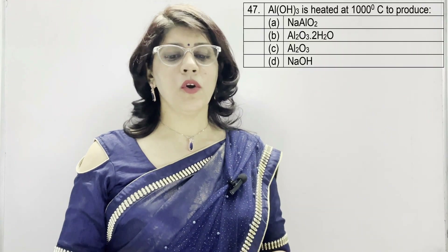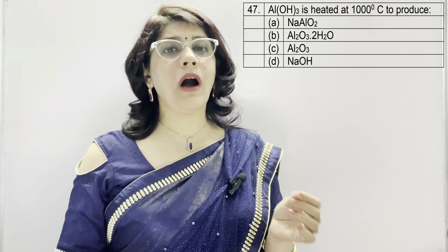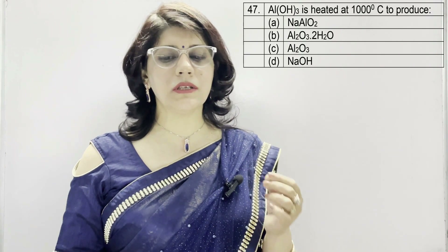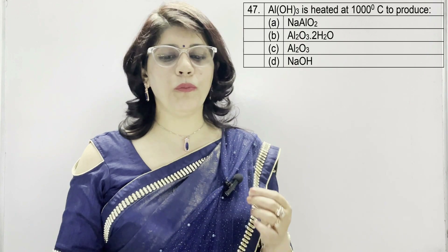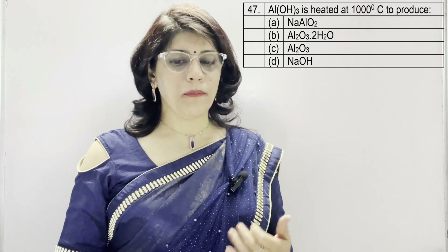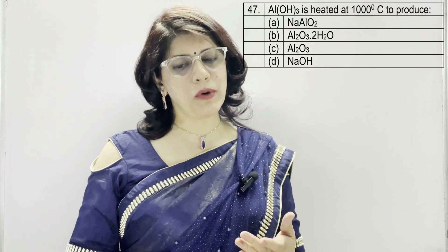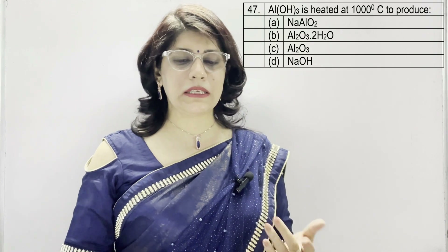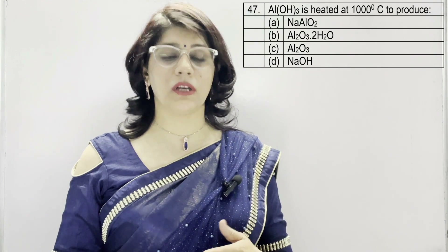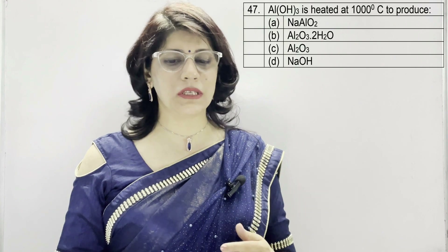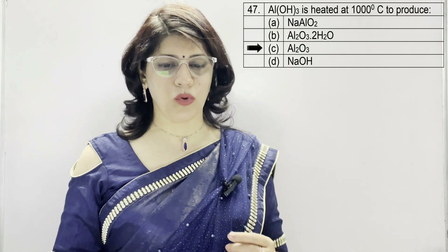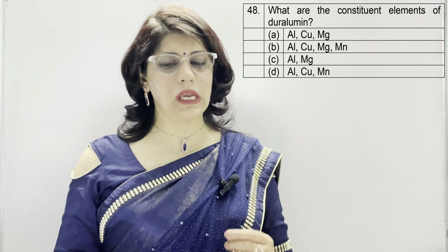In question number 47: aluminium hydroxide is heated at 1000°C to produce — A: NaAlO2, B: Al2O3·2H2O, C: Al2O3, D: NaO8. The correct option is C — aluminium oxide, Al2O3.